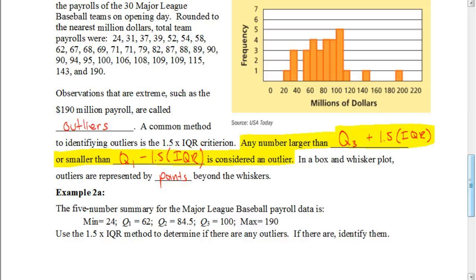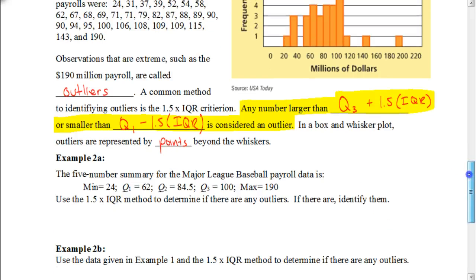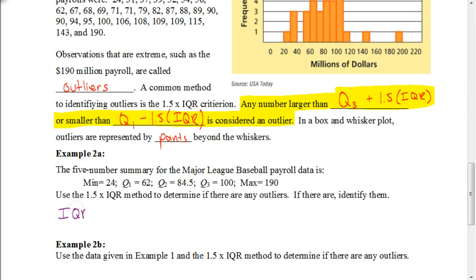Before we can do anything, we first need to figure out the interquartile range. Remember, the interquartile range is calculated by taking Q3 minus Q1. So we take 100 minus 62, which gives us an interquartile range of 38. Our IQR is 38.